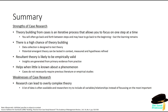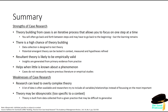There are weaknesses. Research can lead to overly complex theory — there's a lot of data, and people often try to cover all the variables. You really want to focus on what's important, what's strongest, what you can really claim. And it can be idiosyncratic — meaning too specific to a context — because theory is built from the bottom up. You've found something in a specific context, and therefore it may be difficult to generalise.